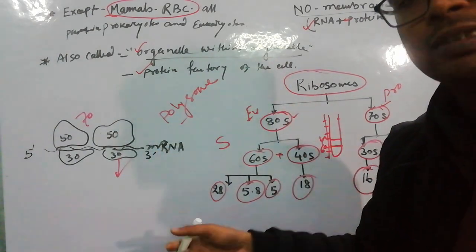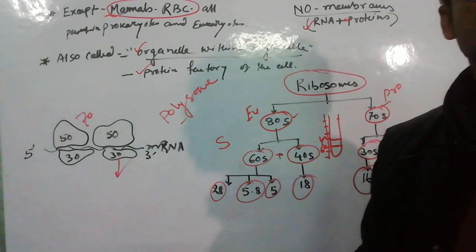One mRNA has many ribosomes. This is called polysome or polyribosome. Thank you for watching.